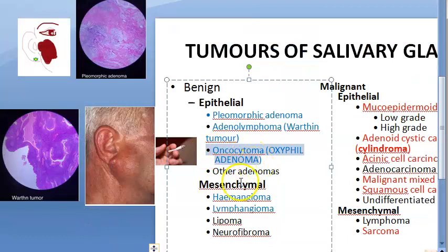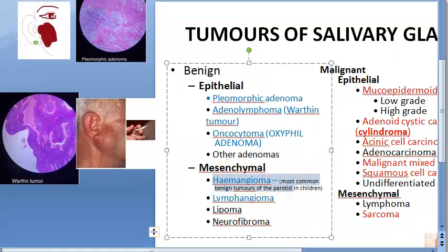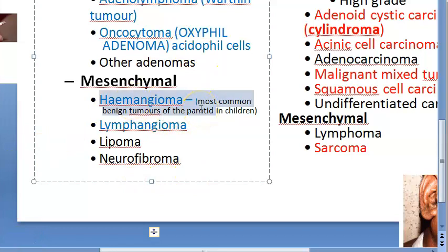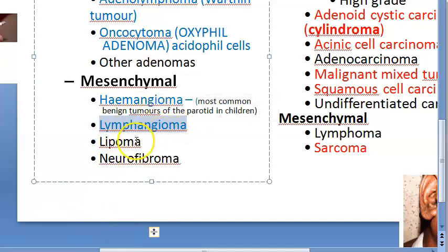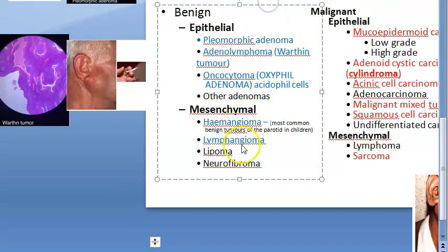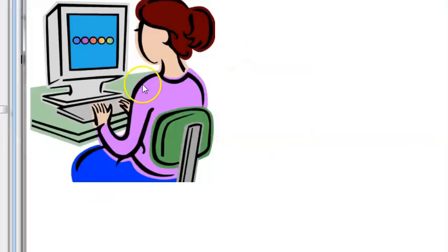Oncocytoma, also called oxyphil adenoma, arises from acidophilic cells. Hemangioma is the most common benign tumor of the parotid in children — it increases in size on crying and if it does not regress spontaneously, surgical excision is done. Lymphangioma is also treated with surgical excision. Key benign tumors to remember: pleomorphic adenoma, Warthin's tumor, and hemangioma.